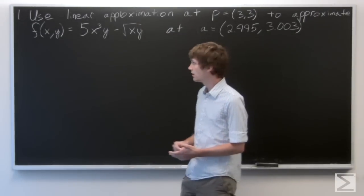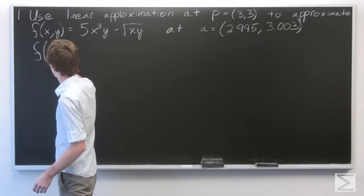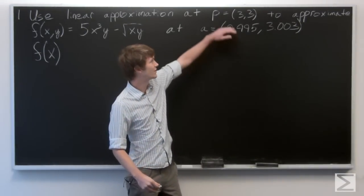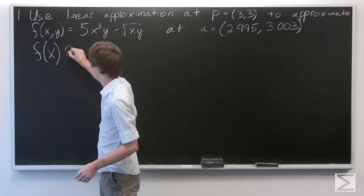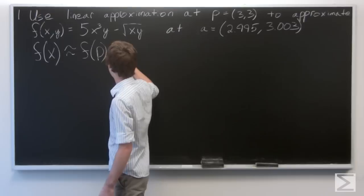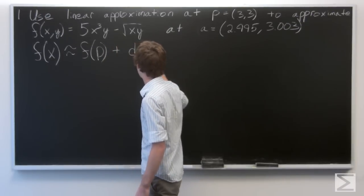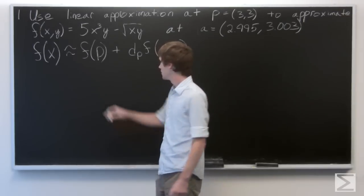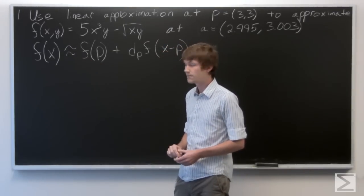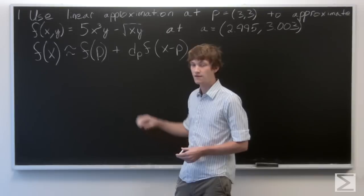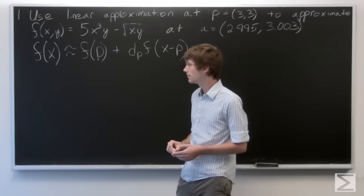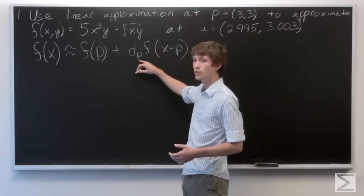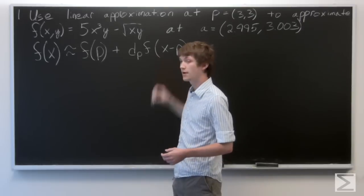We know that if x is close to the point p equals (3, 3), then our function is approximately the value f of p plus the total derivative of f at p with respect to x minus p. The total derivative is the gradient vector of f at the point p, dotted with the vector x minus p.